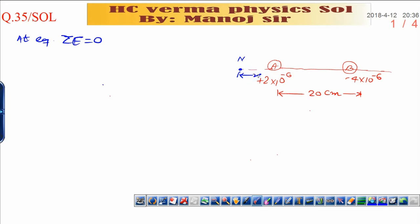Now distance from point A, I am taking x and distance from point B, it will be 20 plus x.